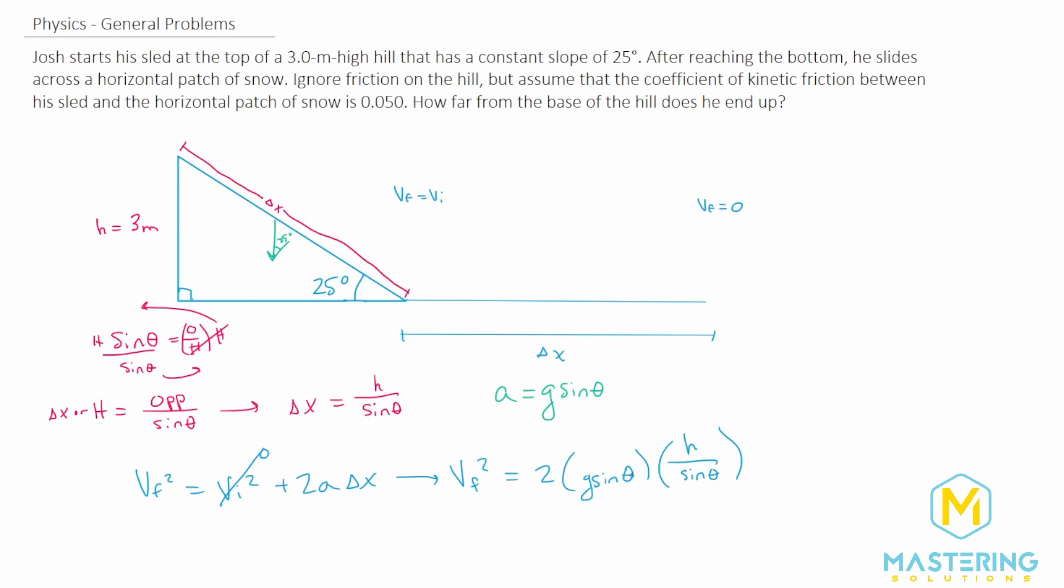Now this is multiplying two fractions, right? Because this is the same as g sine theta over one. So now the sine thetas are opposite of each other. And we can simplify that out. So v final squared is equal to two times gravity times the height.